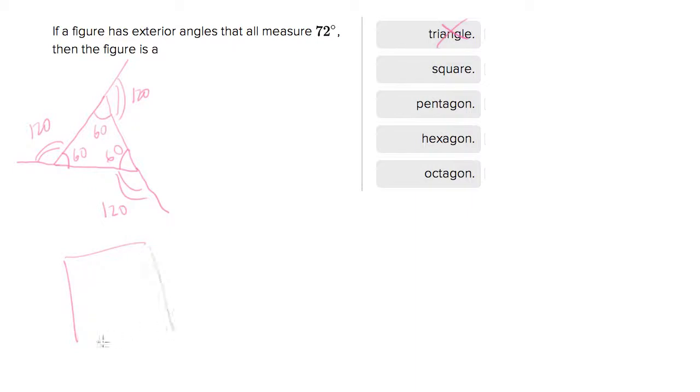So if we do a square, these all measure 90. If you continue these on, square outside measures also 90. So it's not a square. So let's keep going. Let's get even bigger. So let's make a pentagon.